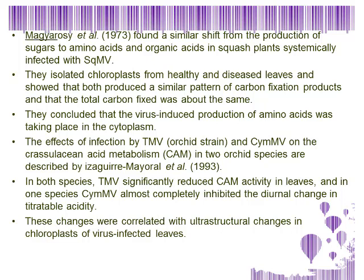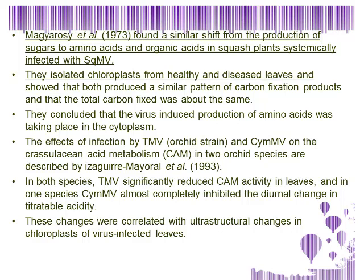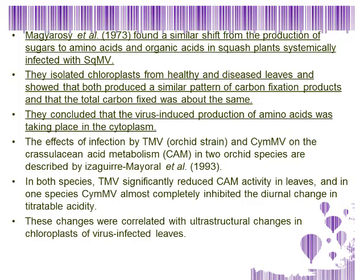In the period of rapid virus multiplication, Maggiore et al. 1973 found a similar shift from the production of sugars to amino acids and organic acids in squash plants systemically infected with Squash Mosaic Virus. They isolated chloroplasts from healthy and diseased leaves and showed that both produced a similar pattern of carbon fixation products and that the total carbon fixed was about the same. They concluded that the virus-induced production of amino acids was taking place in the cytoplasm.